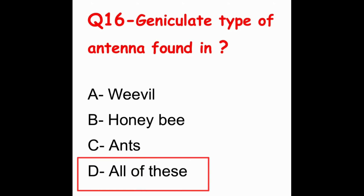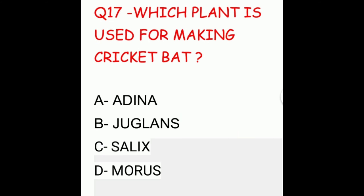Question 17. Which plant is used for making a cricket bat? The options are Adena, Juglans, Salix, or Morus. The correct answer is Salix.